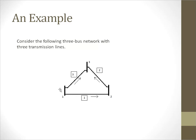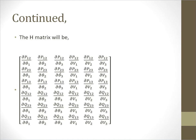So the first part of the Jacobian matrix looks like this. We differentiate all measurements with respect to all states: that is theta 1, theta 2, theta 3, and V1, V2, and V3.